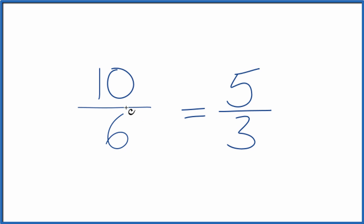So when we simplify the fraction 10 over 6, we get 5 over 3. 10/6, that simplifies down to 5 thirds.